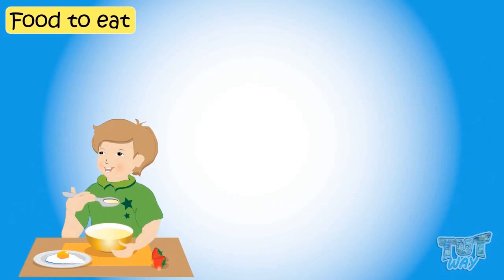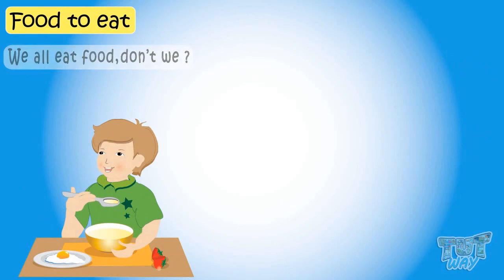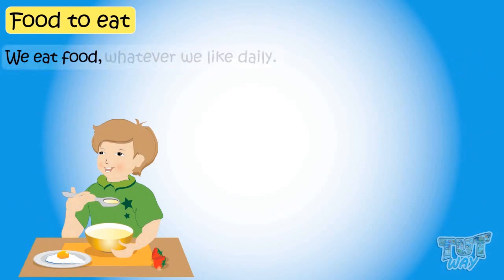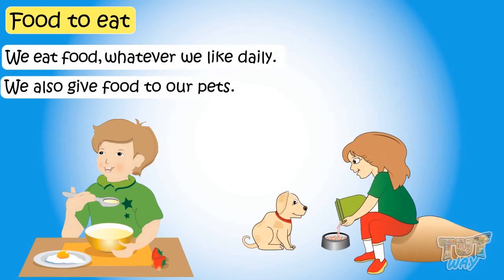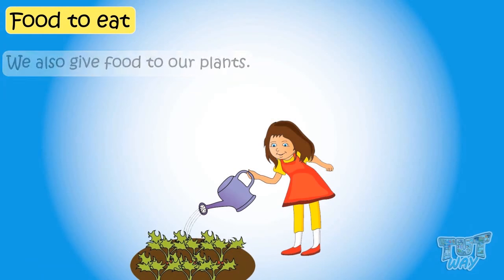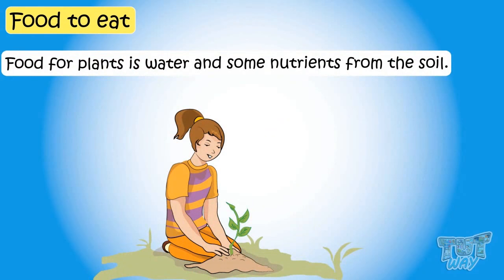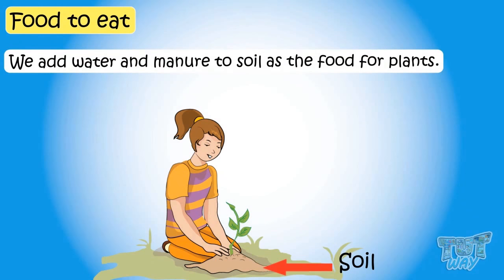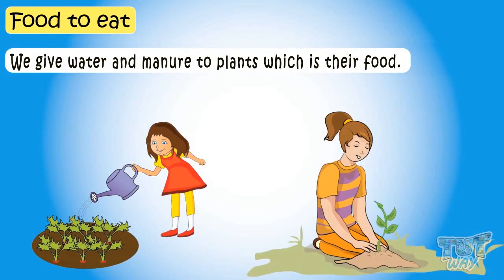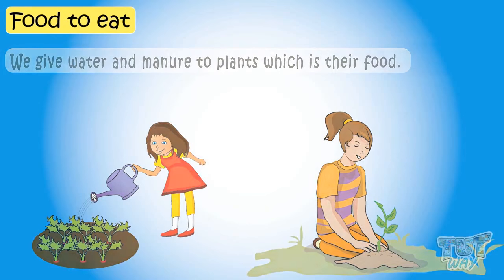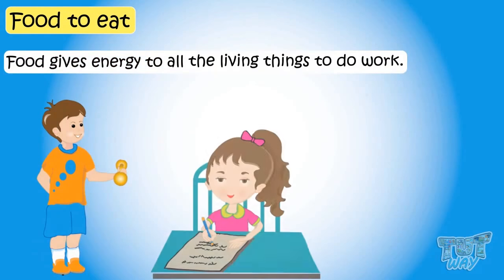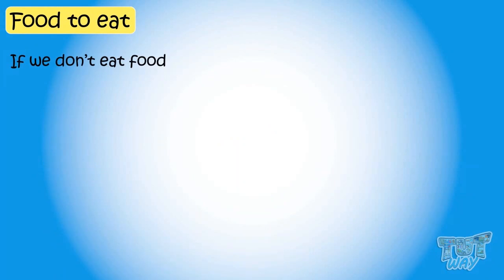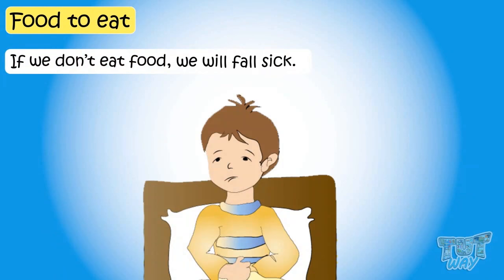Food to eat — we all eat food, don't we? Yes, we eat food whatever we like, daily, so many times a day. We also give food to our pets. Food for plants is water and some nutrients from the soil, and we add water and manure to soil as food for plants. Food gives energy to all living things to do work. If we don't eat food, we will fall sick and will not have the energy to do any work or play and enjoy.